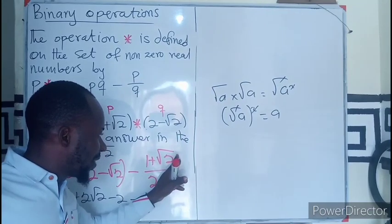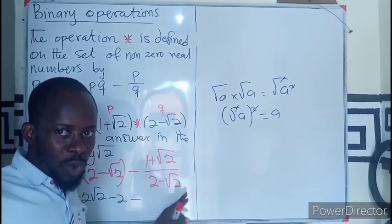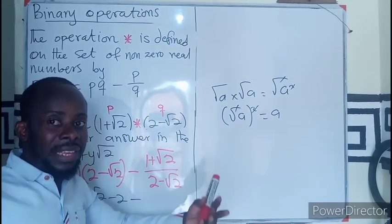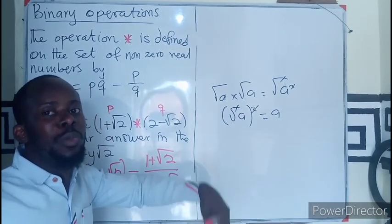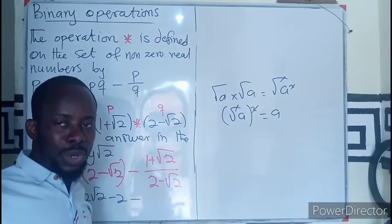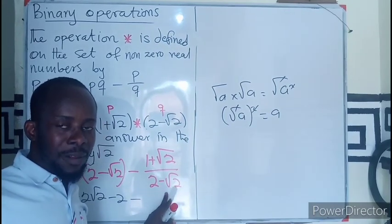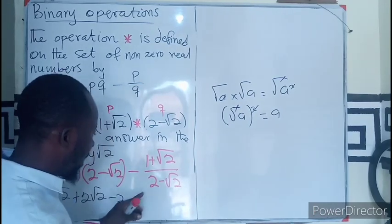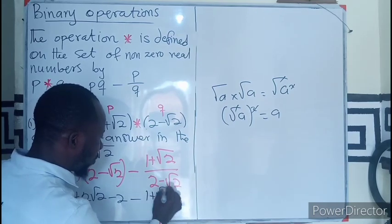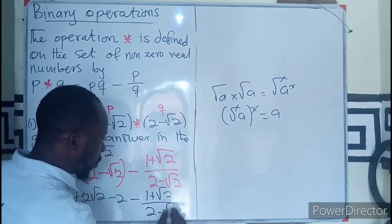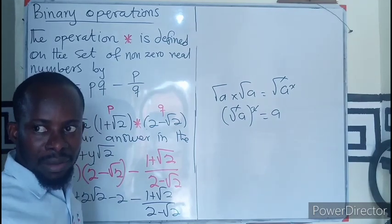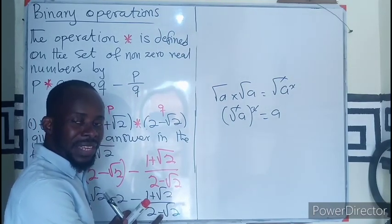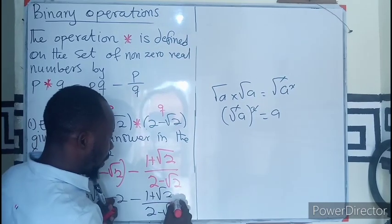Now we operate on the fraction side. We have a fraction with a surd in both numerator and denominator. When a fraction contains a surd in the denominator, we rationalize in order to have only rational numbers in the denominator. By rationalization, we use the conjugate pair of the denominator to multiply both numerator and denominator. The fraction one plus root two over two minus root two will be multiplied by its conjugate pair — the sign separates, so the conjugate will be positive.